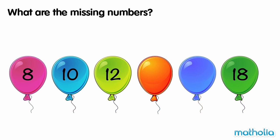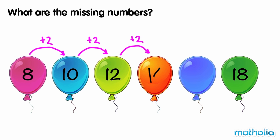What are the missing numbers? 8 plus 2 is 10, 10 plus 2 is 12. In each step the numbers are going up by 2. 12 plus 2 is 14, 14 plus 2 is 16. The missing numbers are 14 and 16.